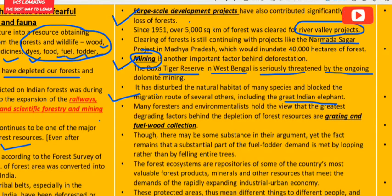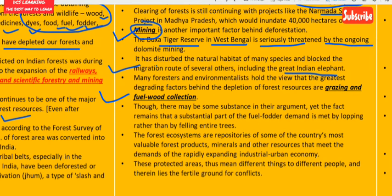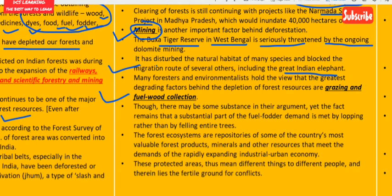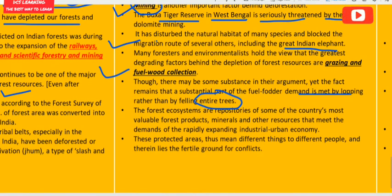Many foresters and environmentalists hold the view that grazing and fuel collection are the greatest degrading factors behind forest depletion. However, a substantial part of fuel demand is met by lopping branches rather than felling entire trees, so only a part of the tree is taken, not the whole tree.